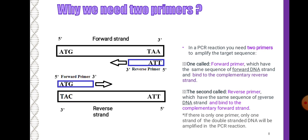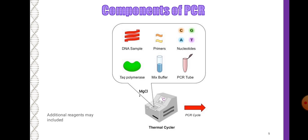You need two primers in a PCR reaction to amplify the target sequence. The first is the forward primer, which has the same sequence as the forward DNA strand and binds to the complementary reverse strand. The second is the reverse primer, which has the same sequence as the reverse DNA strand and binds to the complementary forward strand. If there is only one primer, only one strand of the double-stranded DNA will be amplified.